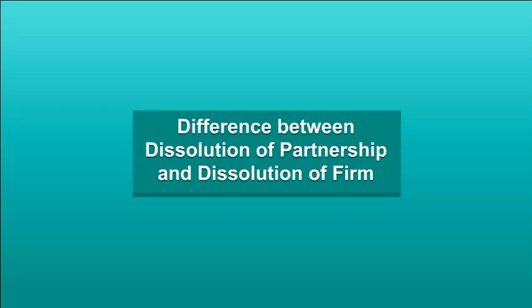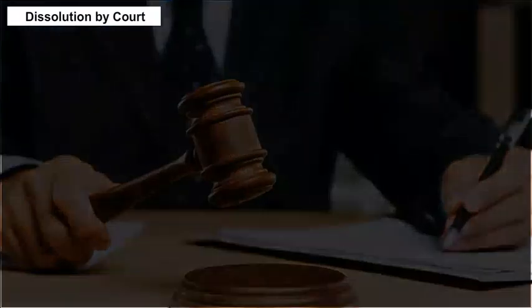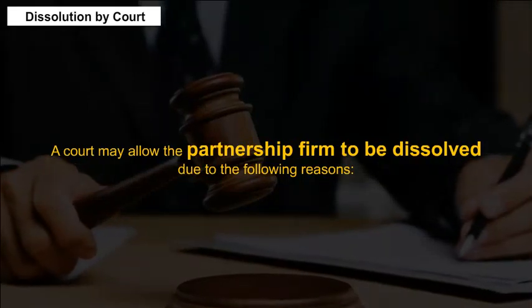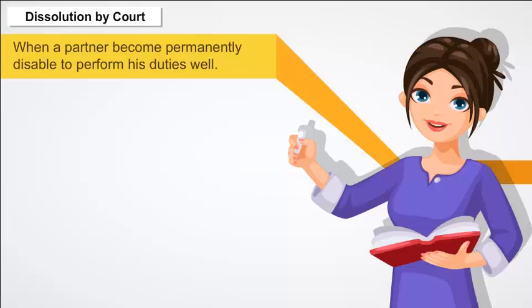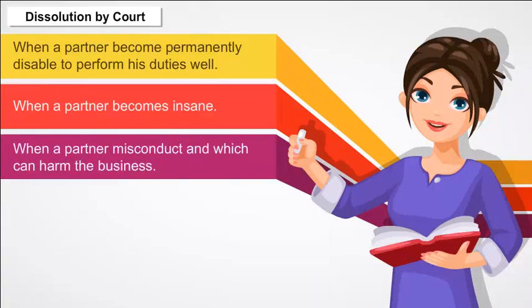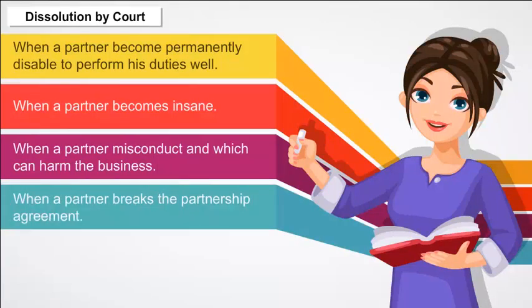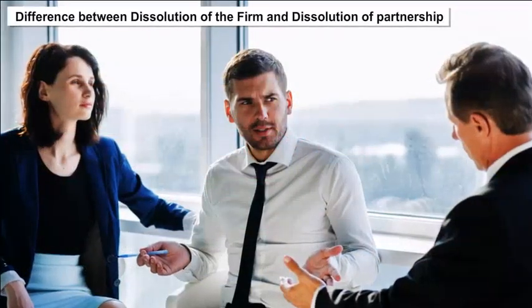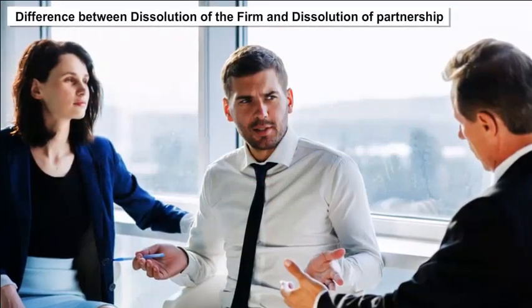Dissolution by Court. A court may allow the partnership firm to be dissolved due to the following reasons: when a partner becomes permanently disabled to perform his duties; when a partner becomes insane; when a partner misconducts in a way that can harm the business; when a partner breaks the partnership agreement; or when the business of the firm cannot be carried on except at a loss.